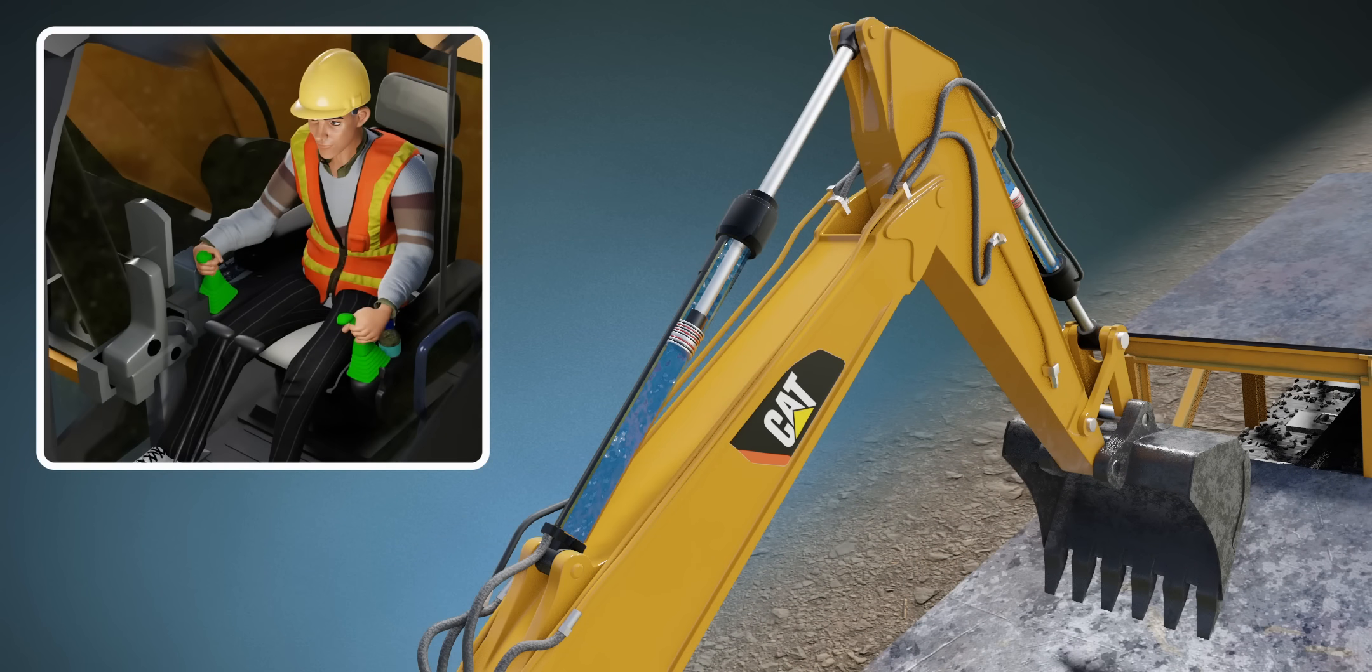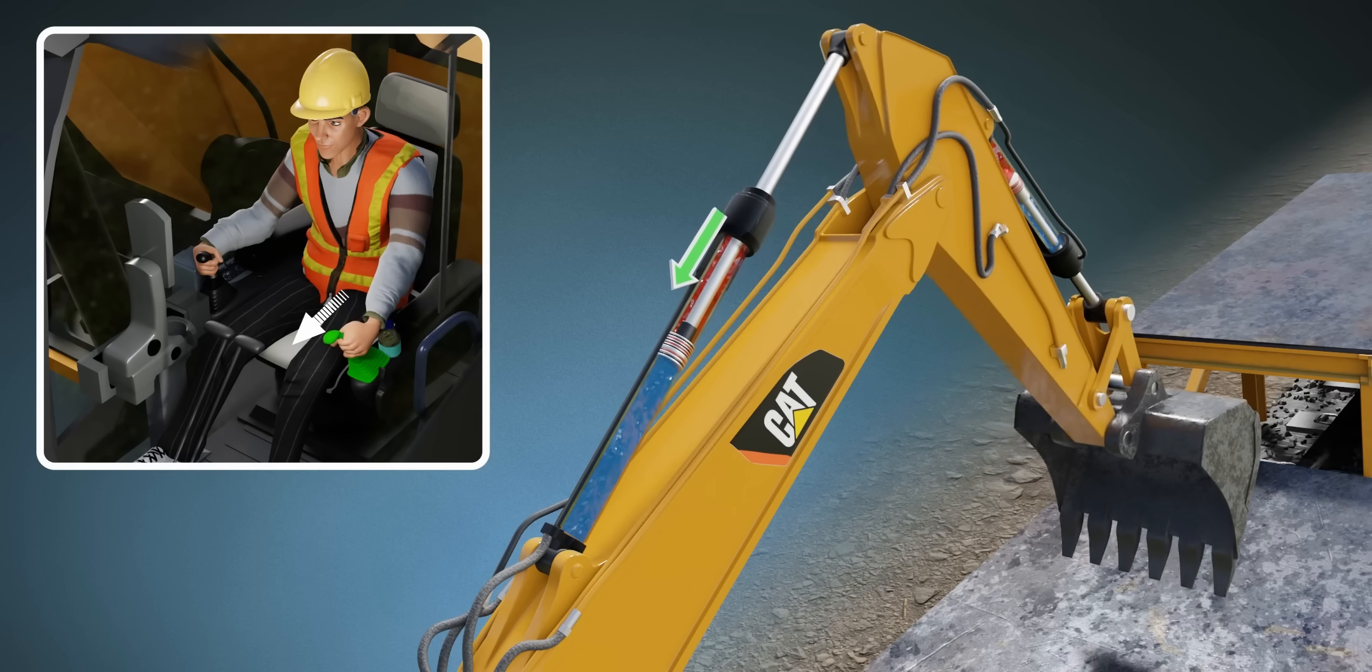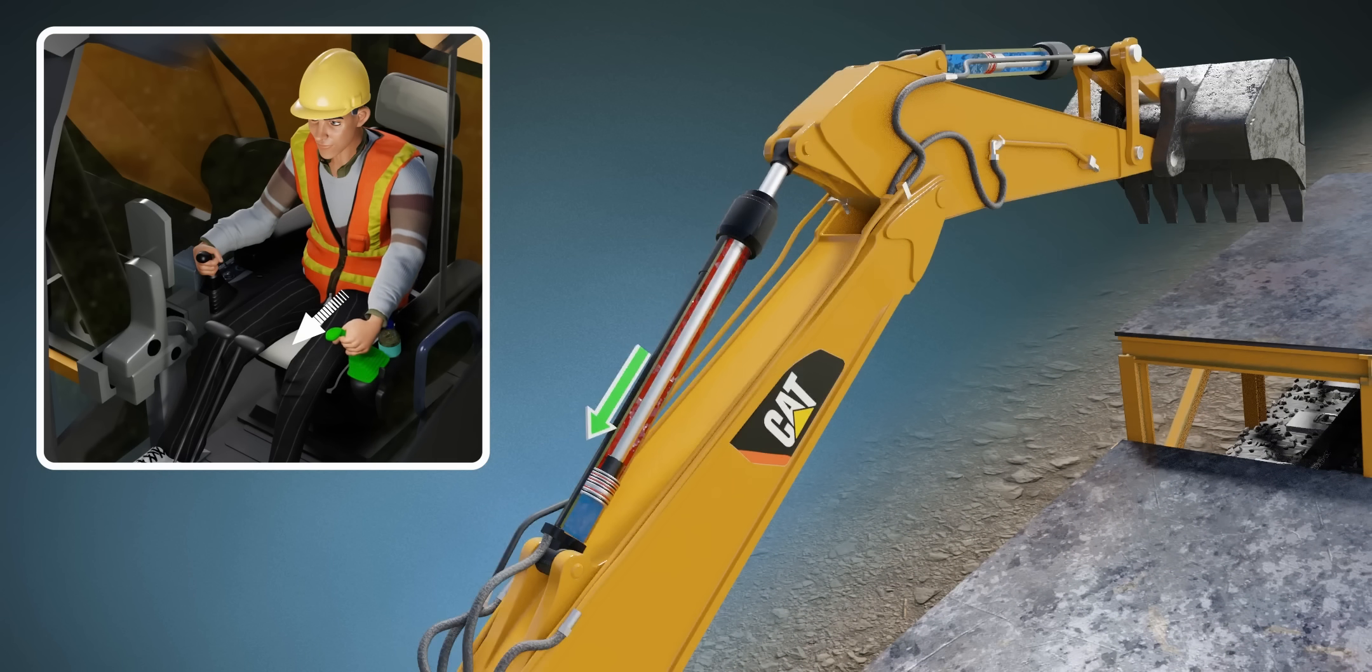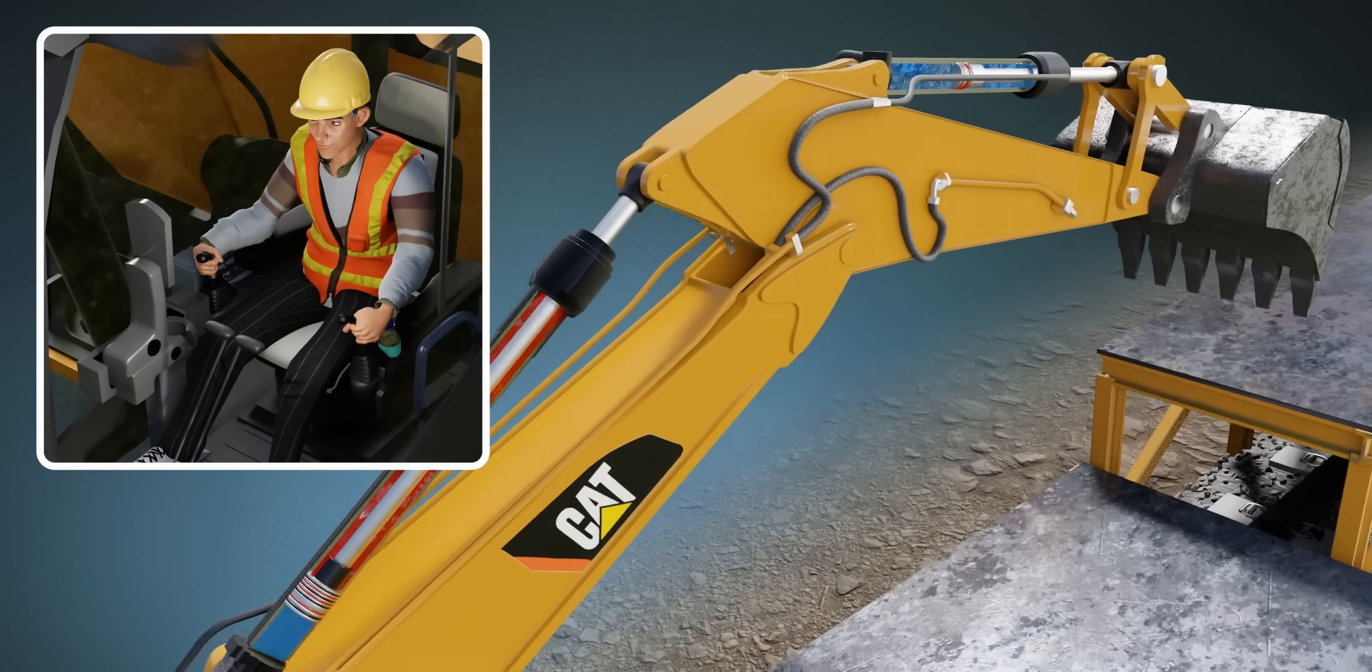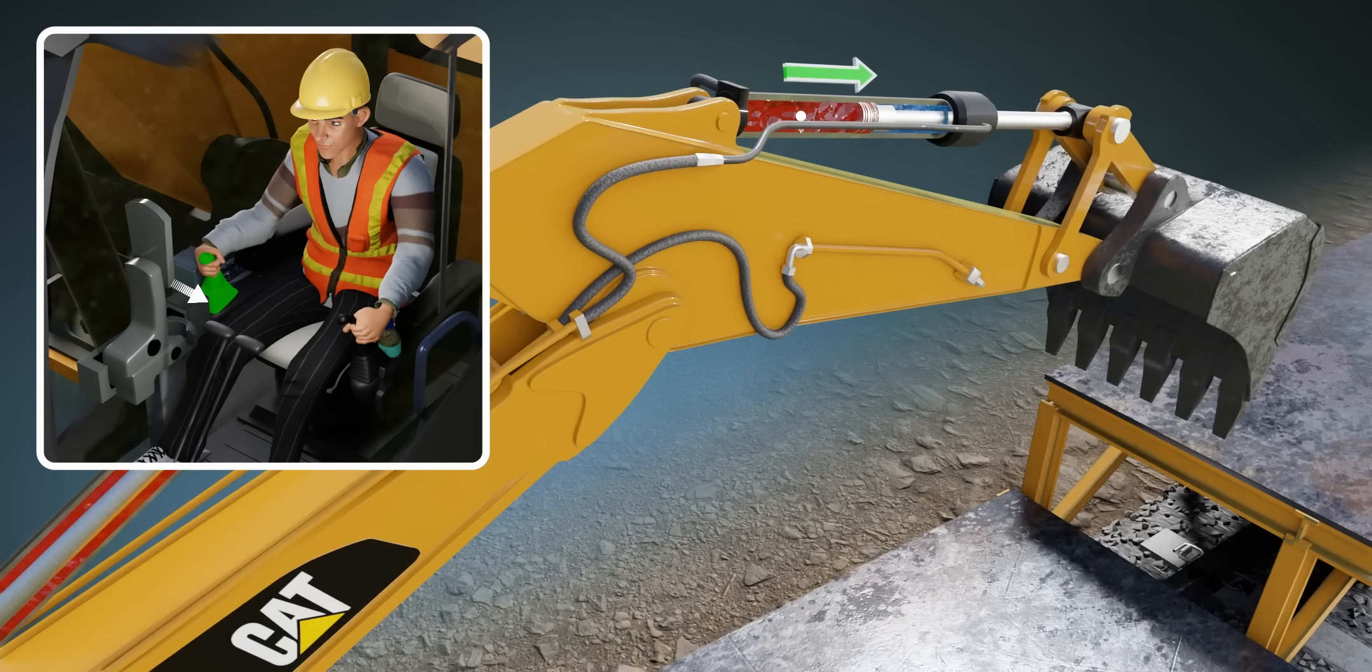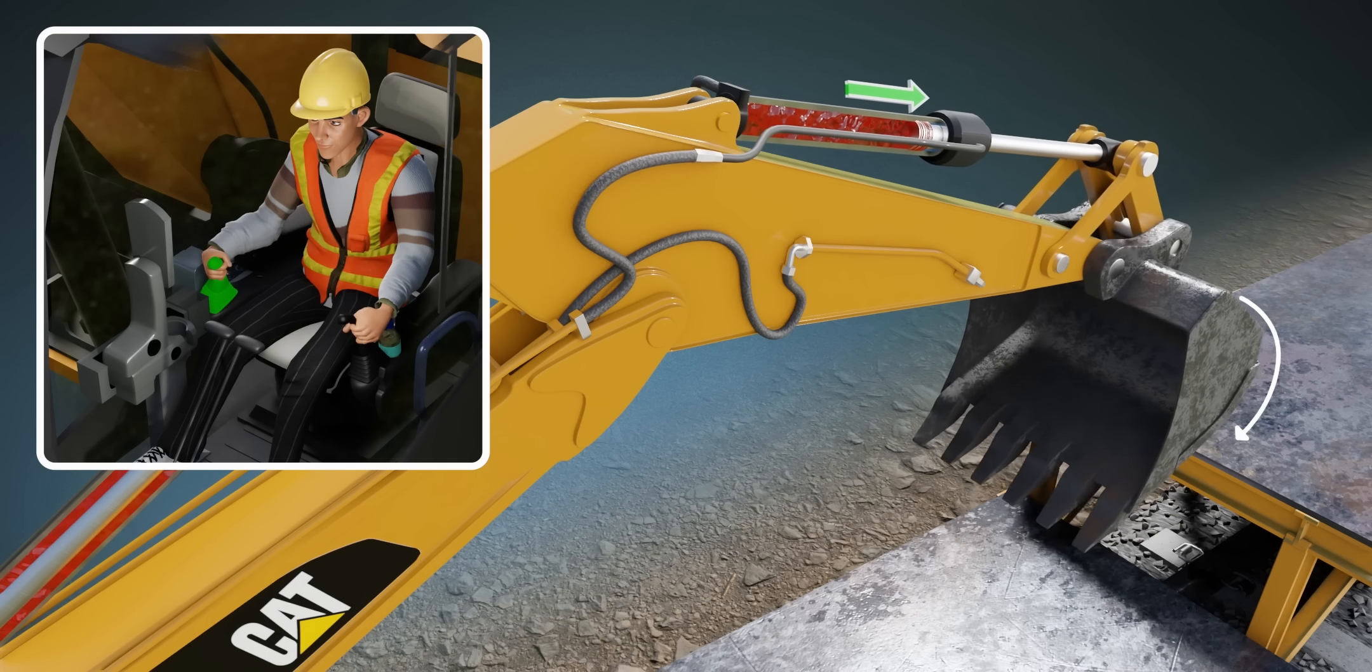The arm is controlled by these joysticks. When the driver moves the left joystick forward, high-pressure fluid enters the cylinder of the arm. When this happens, the arm rolls out. Now it's time to make the bucket curl downwards. To do this, simply activate the right joystick. You can see how this beautiful mechanism is activated by the piston movement and moves the bucket downwards.